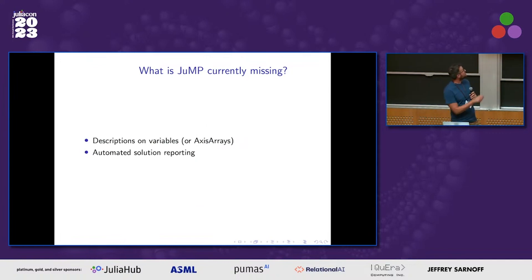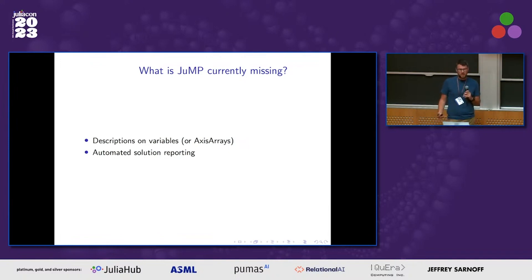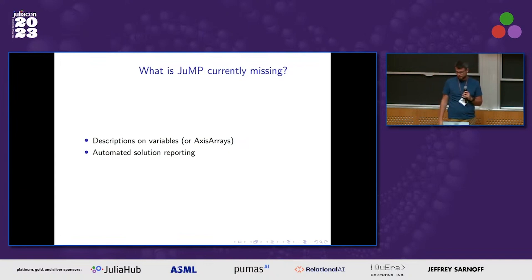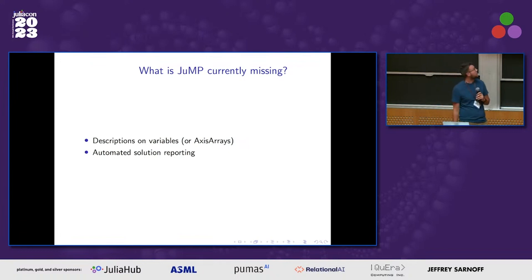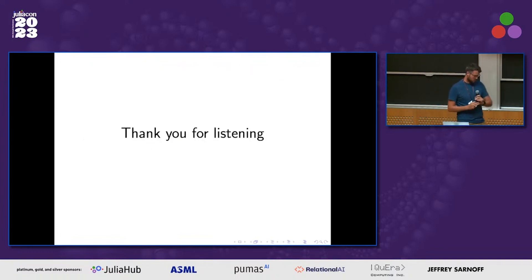The other things JuMP is missing compared to GAMS: descriptions on variables — this might actually be easier to add, perhaps just through the axes arrays container — and automatic solution reporting. When you solve a model in GAMS, it's very easy to get a full description of your model, and those descriptions are on the variables so you can send results to people and they immediately know, for example, that Y is the price of some commodity. And I think I finished exactly on time — thank you for listening.